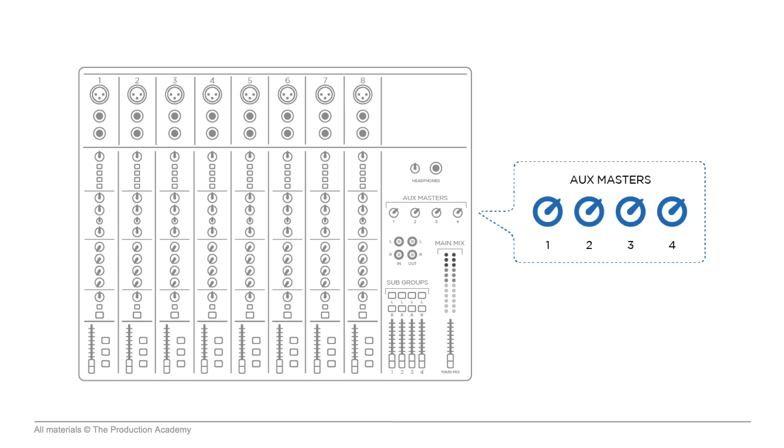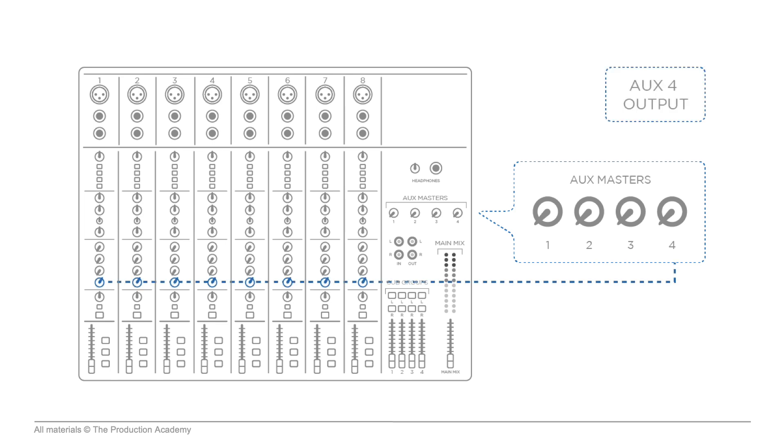Aux sends also have master knobs or faders that control the overall level of the aux output. So even if the sends on the channels are up, we will only get signal to the output if the master is also up. Many analog consoles use knobs for the aux masters, but on most digital consoles, the master send is on a fader, but on a different fader bank than the inputs. So if these faders are showing my inputs right now, I have to switch to a different fader bank to see my outputs, and my master aux sends are here.